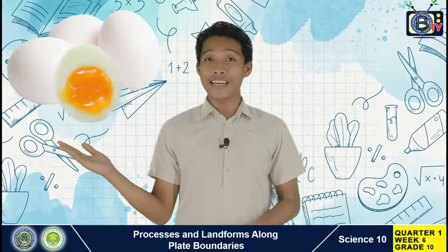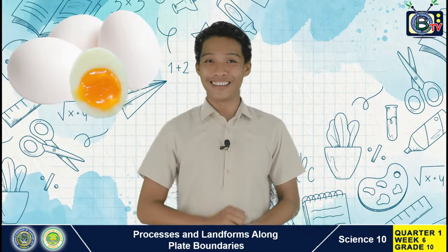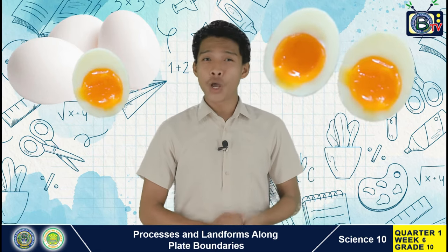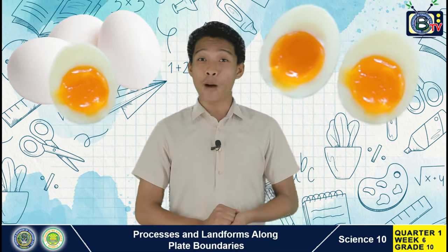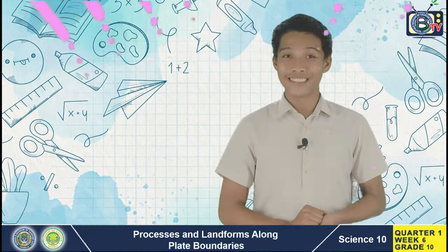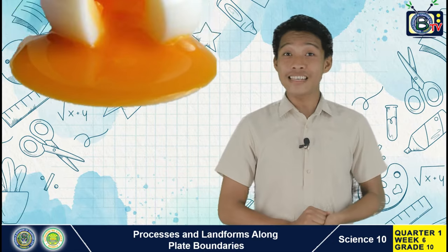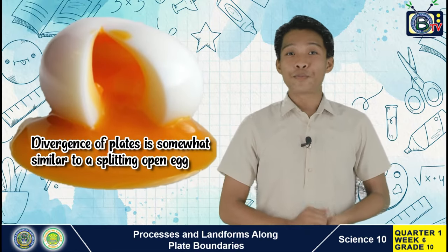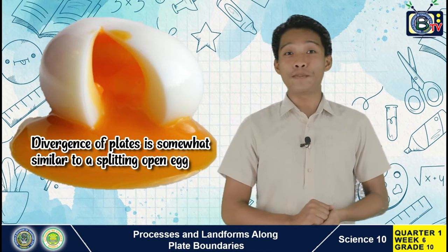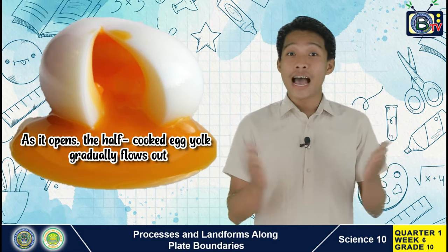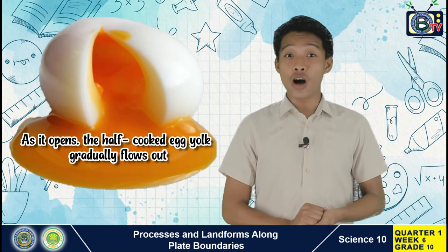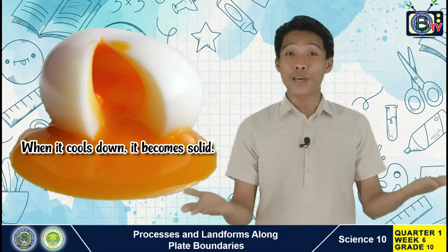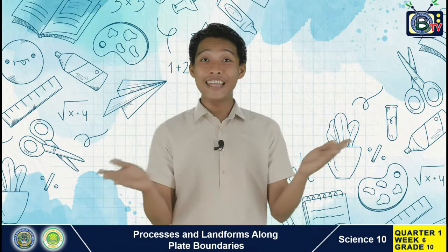Have you tried eating a half-cooked egg? As you cut open the white part with your spoon, the half-cooked egg yolk flows out. Divergence of plates is somewhat similar to a splitting open egg — as it opens, the half-cooked egg yolk gradually flows out, and when it cools down, it becomes solid. Now let's proceed to the processes and landforms that occur along the transform fault boundary.